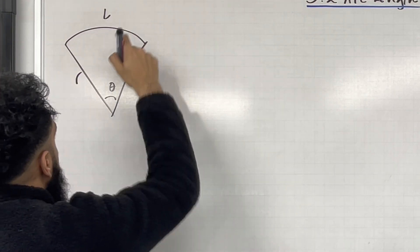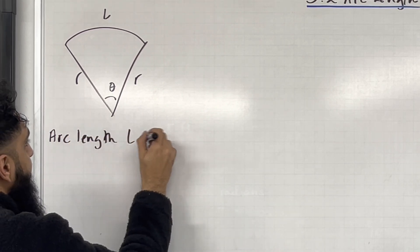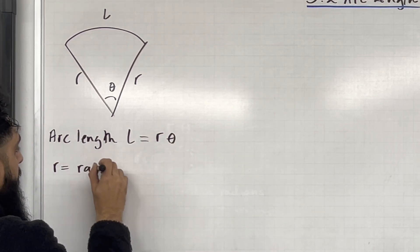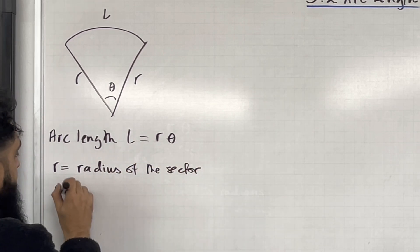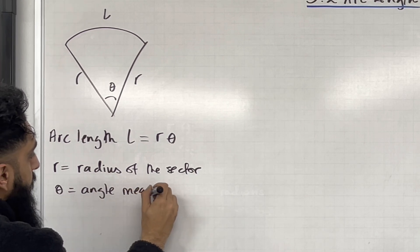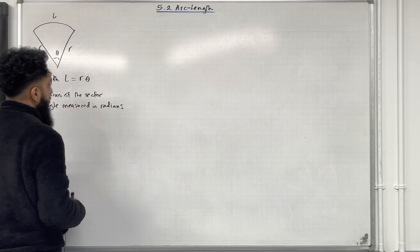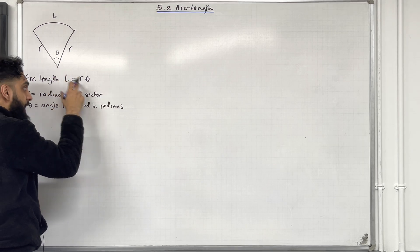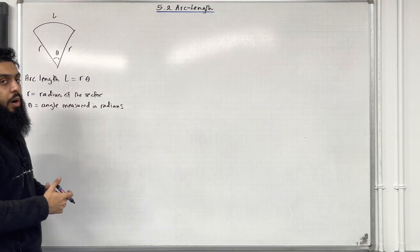Let L be the arc length. Ladies and gents, the arc length L is given by radius multiplied by theta. So R equals radius of the sector. Theta equals angle measured in radians. So if the angle is measured in radians, the arc length is calculated by taking radius multiplying by theta. This is the key fact of 5.2 arc length.